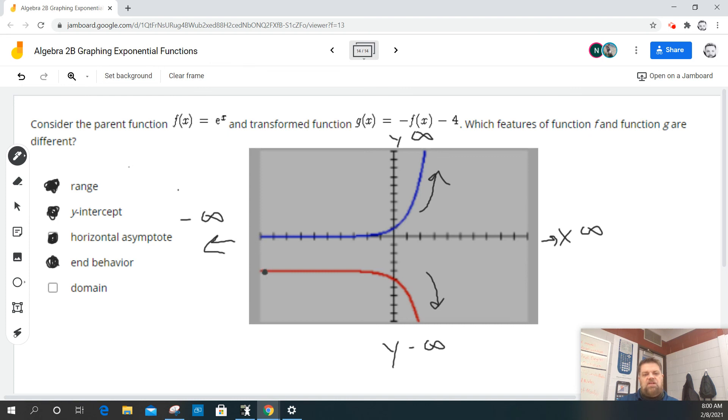But g of x approaches, it looks like negative 4. So, that's it on that one, okay?